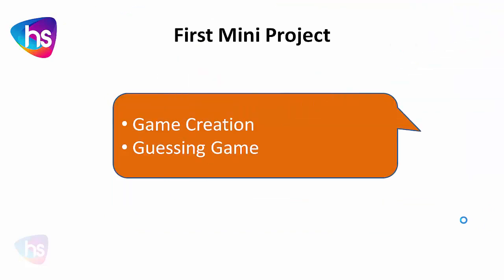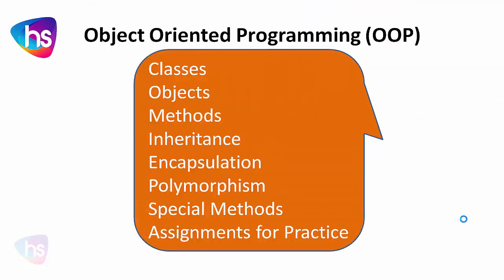The first mini-project is a game creation — a guessing game. The beginner will write a guessing game where you have to find a secret number and you have three chances to find it. You can play and enjoy writing the program. Once you have completed the basics, you can write the guessing game very easily.